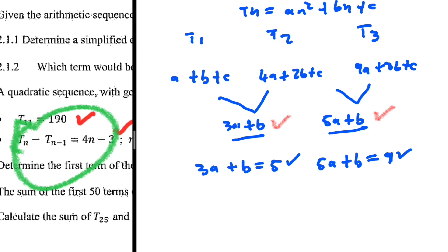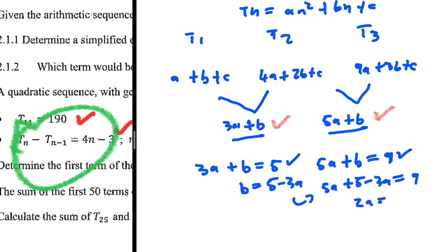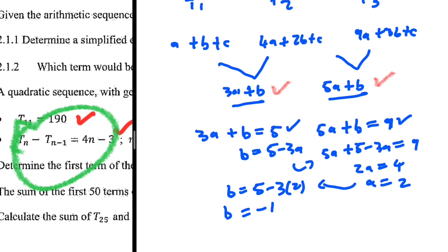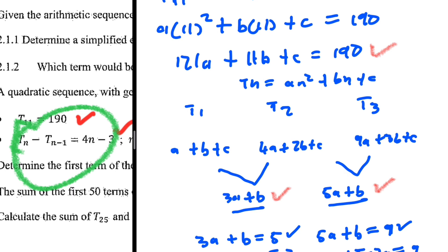With those two equations, we solve for a and b. Making b the subject from the first: b = 5 - 3a. Substituting into 5a + b = 9: 5a + 5 - 3a = 9, so 2a = 4, giving a = 2. Then b = 5 - 3(2) = -1.